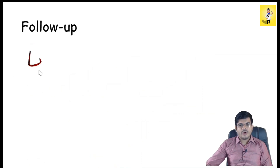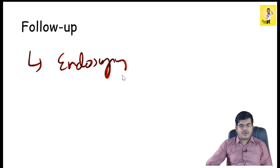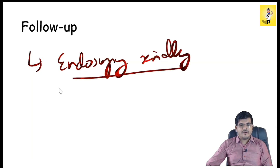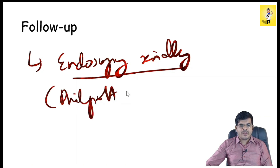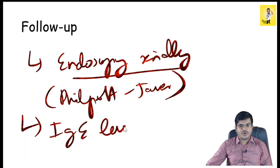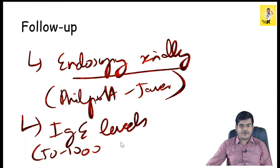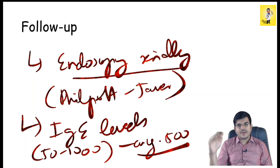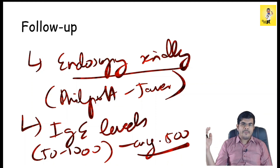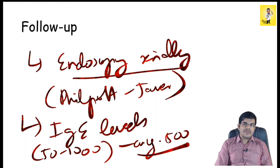For follow-up, serial endoscopy can be done and the Filport-Jawar endoscopic staging system can be used for assessment. IgE level estimation is also useful — in AFRS it is usually elevated between 50 to 1000, with an average around 500. You can assess whether IgE is coming down or going up according to the severity of the disease. That is how you follow up patients who have had AFRS surgery. That concludes the topic of allergic fungal rhinosinusitis.